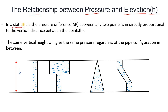In a static fluid — what is the meaning of static fluid? It means a body of fluid at rest. When your body of fluid is at rest, it is a static fluid. In a static fluid, the pressure difference, that is delta p, between any two points —